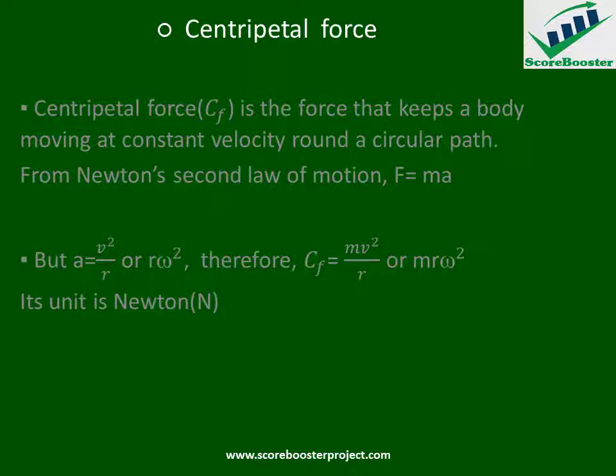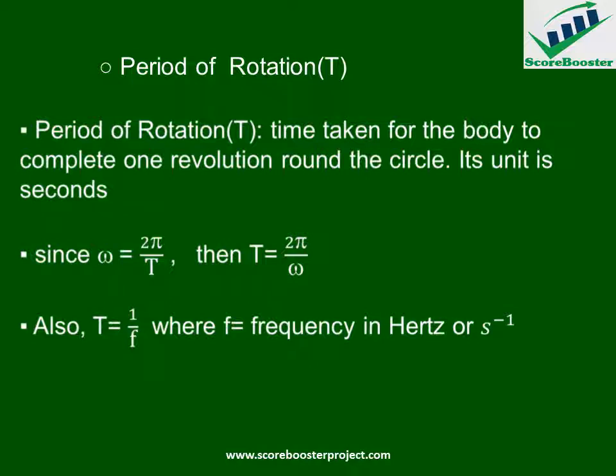Having understood centripetal force, we also need to consider the period of rotation T. The period T is the time taken for the body to complete one revolution around a circle. Its unit is seconds. Since omega equals 2 pi over T, making T the subject gives us T equals 2 pi over omega. Alternatively, we can calculate T from frequency using T equals 1 over f, where f is frequency in hertz or per second.